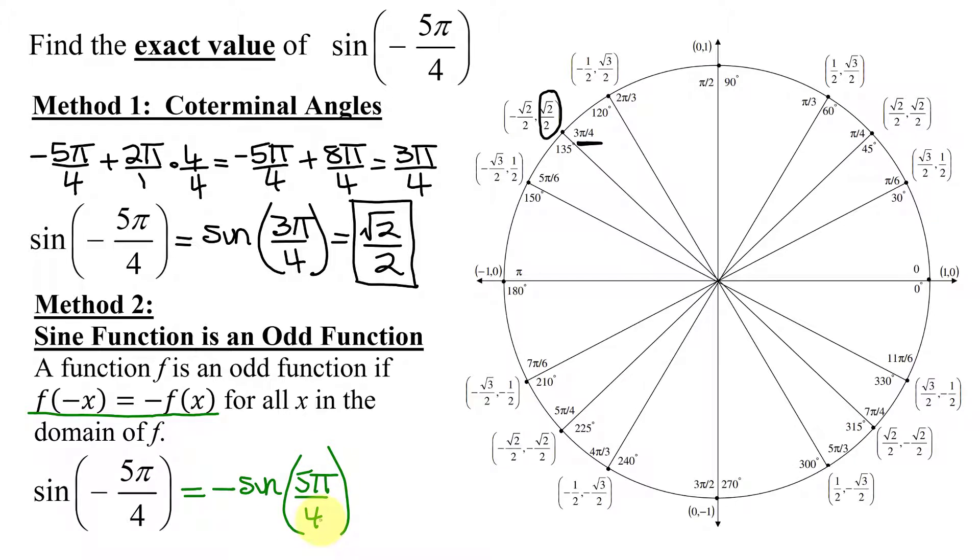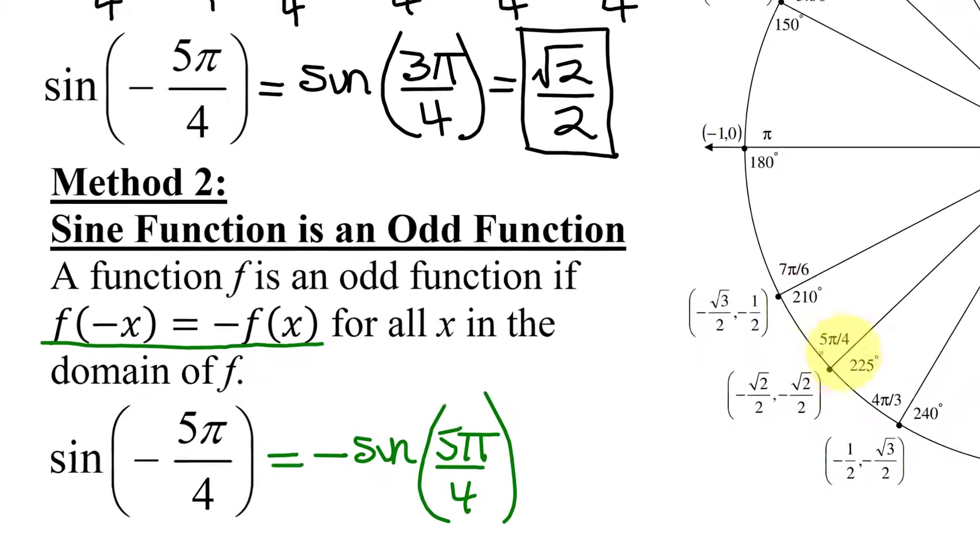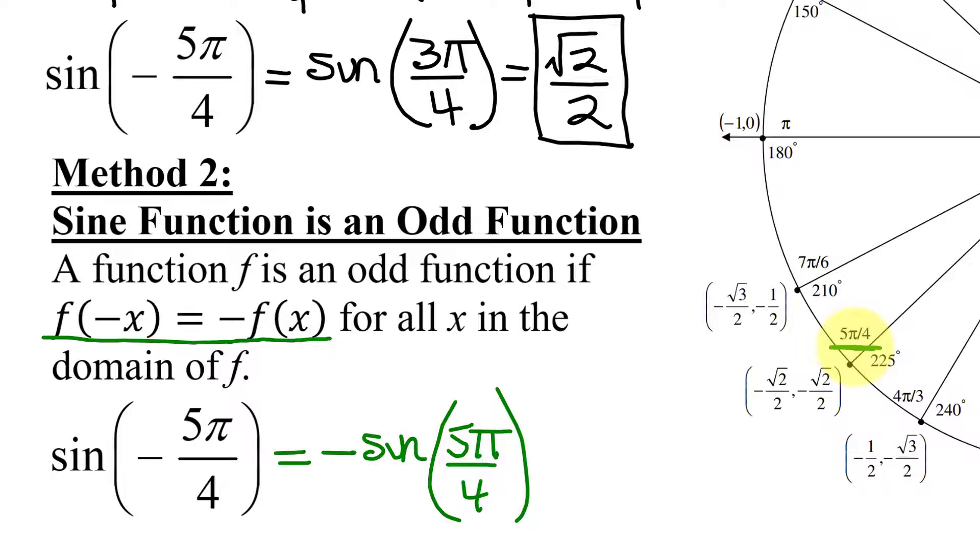Now is 5π over 4 on the unit circle? Yes, it is right here. I need the sine of this angle, so that's the y-coordinate, which is negative the square root of 2 over 2. So my answer is going to be the opposite of this y-coordinate of negative the square root of 2 divided by 2.